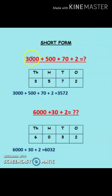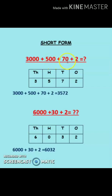The question is three thousand plus five hundred plus seventy plus two, and we have to find the short form. One way is by simply reading it aloud: three thousand five hundred seventy-two. So I will simply write down the answer: three thousand five hundred seventy-two.